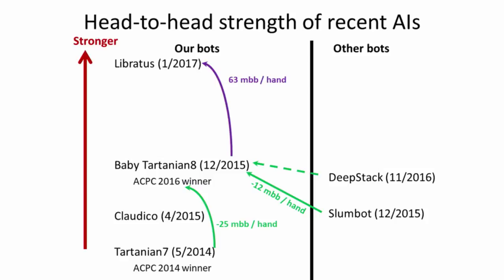But our AI Libratus, which uses nested sub-game solving, is able to beat Baby Tartanian 8 by 63 millibig blinds per hand, which is a wide margin. And this is due largely to nested sub-game solving. In fact, if you don't use nested sub-game solving in Libratus, it's only about tied with Baby Tartanian 8.